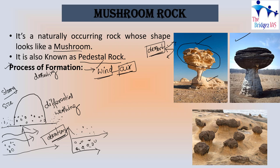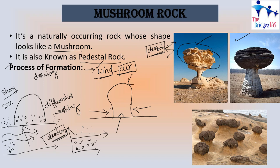When this process happens over a very long period of time, the bottom of the rock gets weathered and starts degrading. Over time you get a narrowed shape at the bottom. If the same thing happens in all directions — from the front, left, right, and back — then throughout 360 degrees there will be friction, resulting in weathering of the rock. Finally, this forms a mushroom-shaped rock which is narrowed at the bottom.